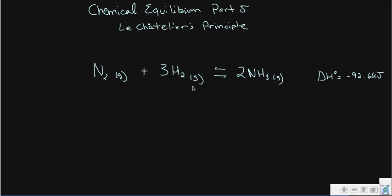The idea is that if you understand equilibrium — this point at which reactants are turning into products and products back into reactants — if you add more reactants or take away some reactants, that's going to shift everything. The reaction will come out of equilibrium and proceed in a way that gets it back to equilibrium as quickly as possible, because reactions want to establish equilibrium. They seek to get to that point where it's even back and forth.